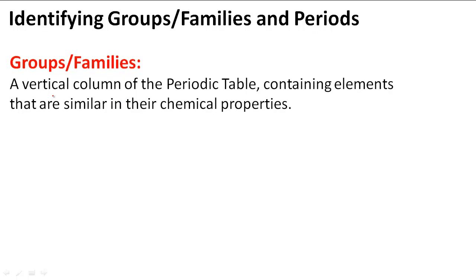Groups or families are the vertical columns of the periodic table containing elements that are similar in their chemical properties. Like any other family, there are some things that have traits in common, whether it be traditions, how they look, or where they come from. These are things that make them similar. So think of vertical columns as a family or group because they have common, similar chemical properties.